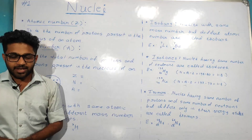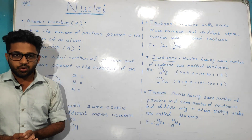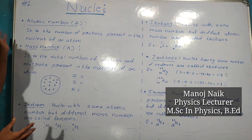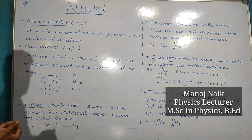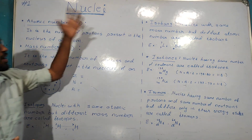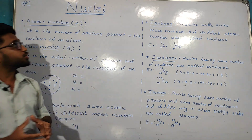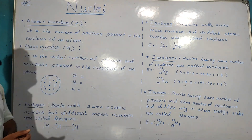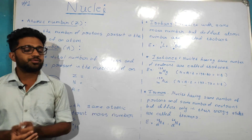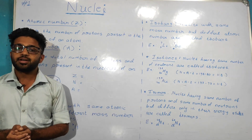Hello, welcome to EducateRideForLife. In this video we are going to discuss concepts like atomic number, mass number, isotopes, isobars, isotones, and isomers. All these concepts belong to chapter Nuclei, which is the 13th chapter of 2nd PUC Physics according to the NCERT syllabus of Karnataka.